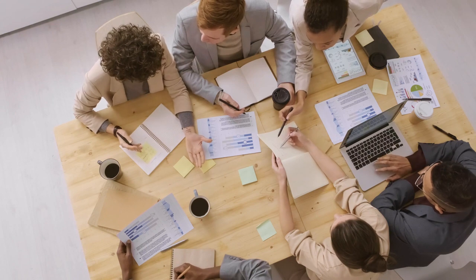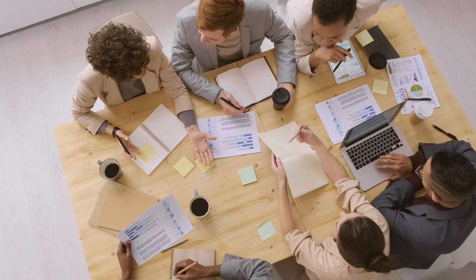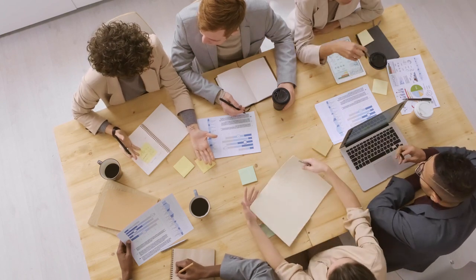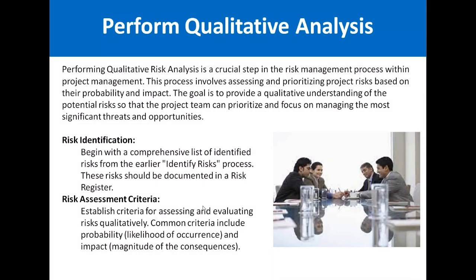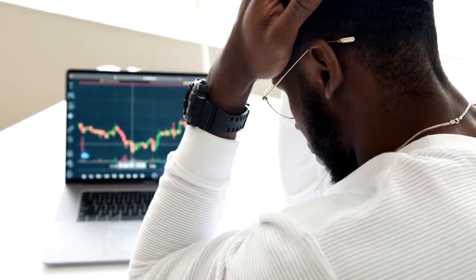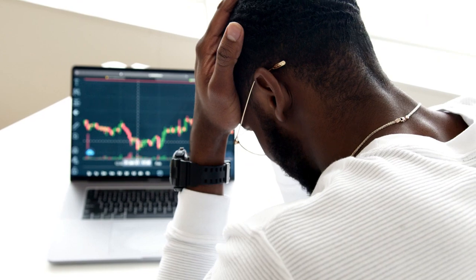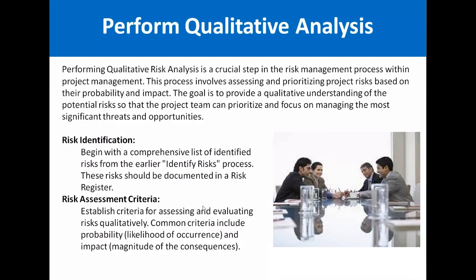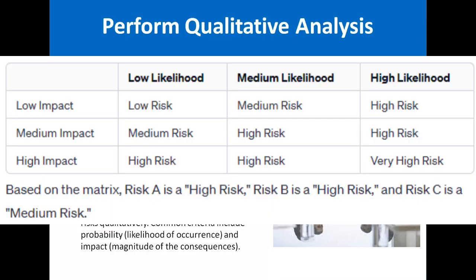Risk means any uncertain condition in a project for which you are not sure whether it will happen or not. If it happens, it may have a negative or positive impact on the project. If it has a negative impact, we have to mitigate it; if it has a positive impact, we have to enhance that impact. Every risk has a likelihood and an impact — likelihood means the probability of occurrence, and impact means the effect on scope, time, cost, etc. Based on probability and impact, we prioritize risks as high, medium, or low.